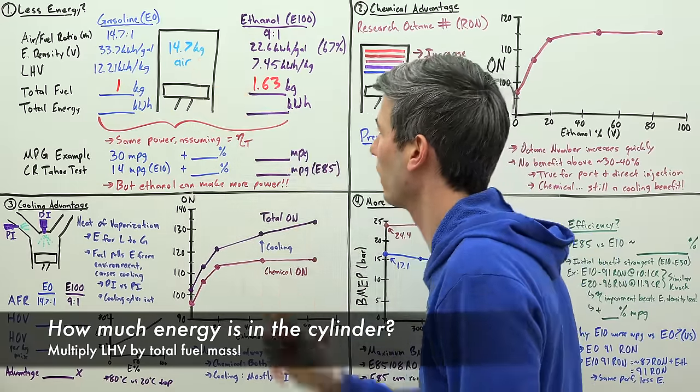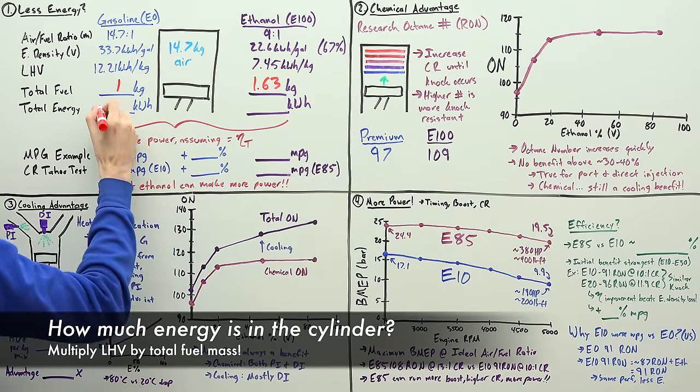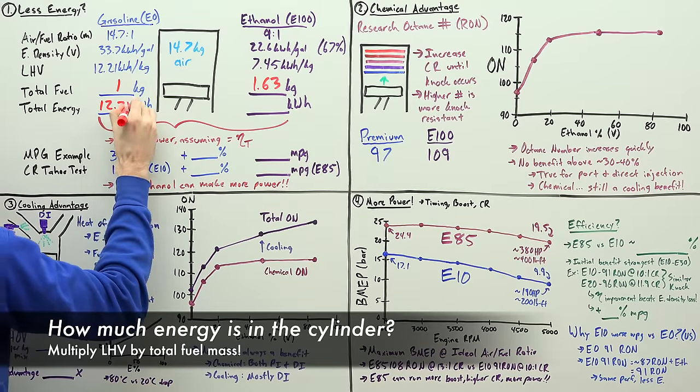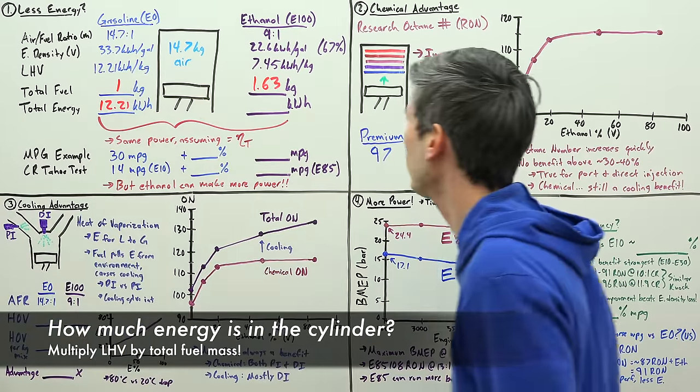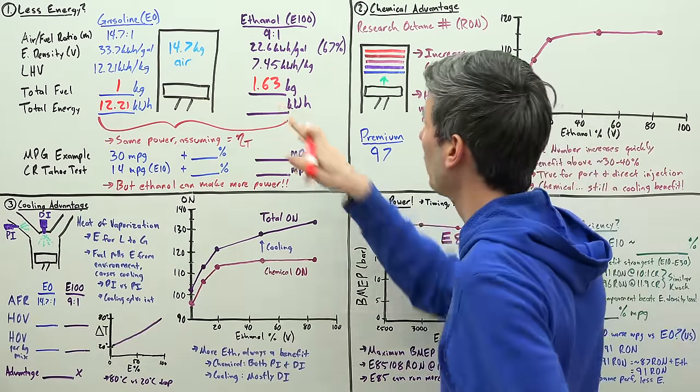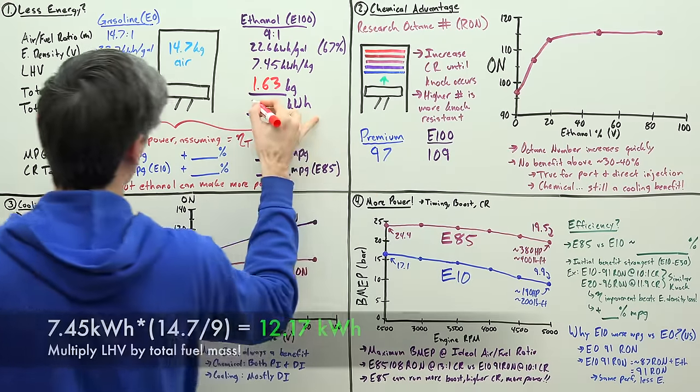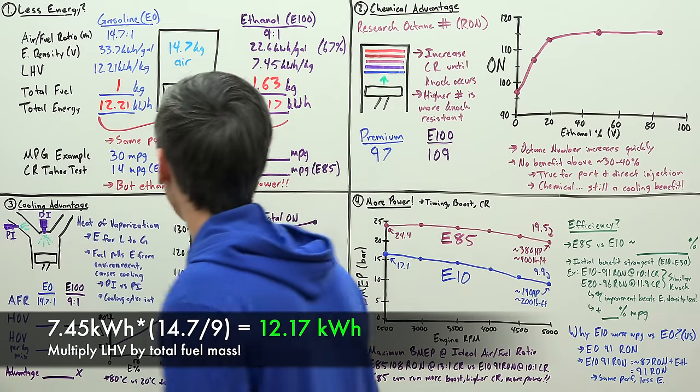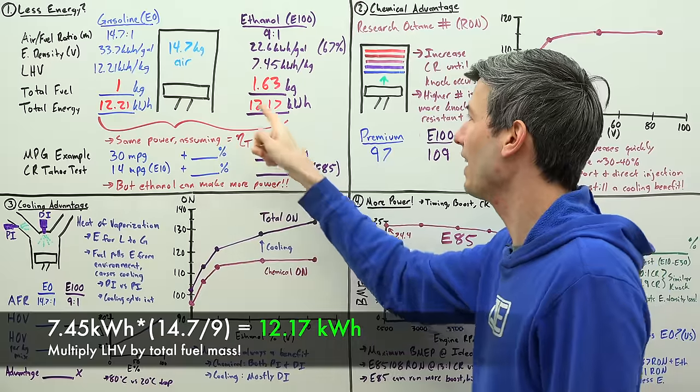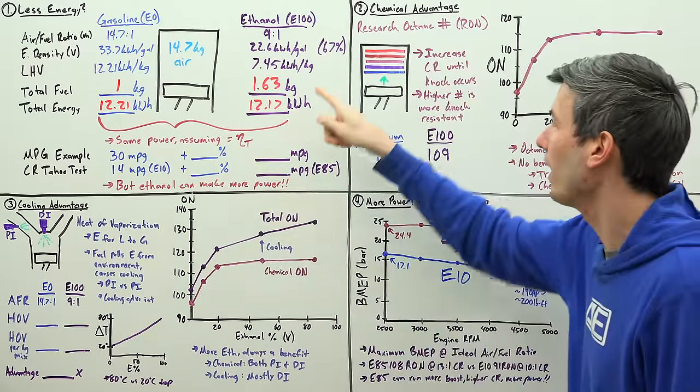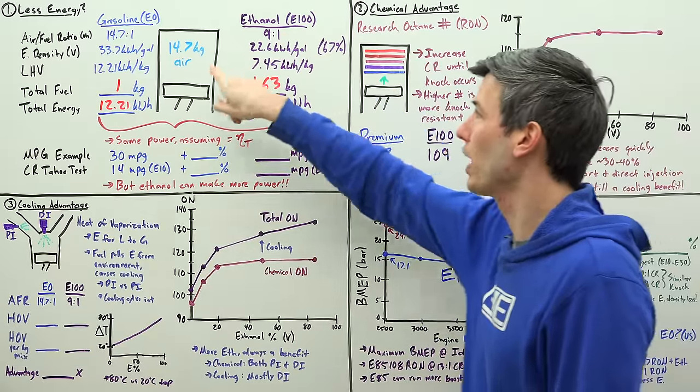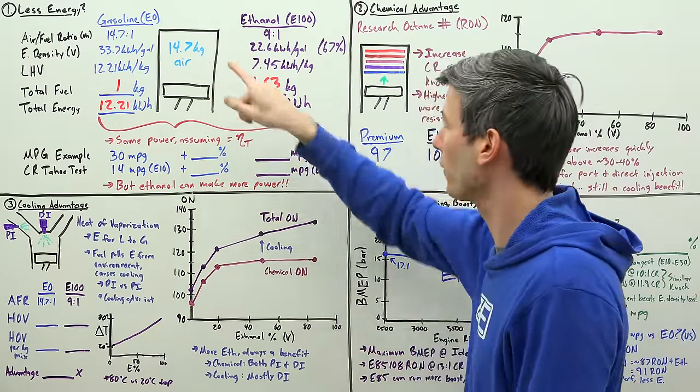So now if we multiply our energy density by how much fuel is going in, that'll tell us the total amount of energy that will then be in that cylinder with the air and the fuel. So we multiply 12.21 times 1, pretty easy, 12.21 kilowatt hours within that cylinder. And then for ethanol we multiply 7.45 by 1.63 and that gives us 12.17. So as you can see these are nearly identical.